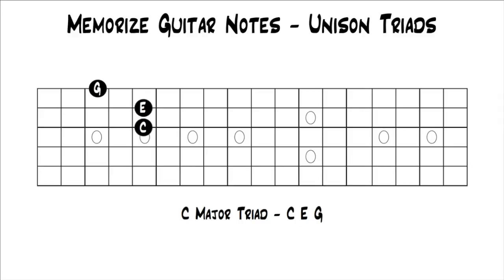In the last lesson, we worked on memorizing the notes on the fretboard by finding vertical triads. For example, we started with the C major triad, and we would have taken the highest note, moved it to the lowest note, but keeping it on three adjacent strings, and that would put it into a different inversion.